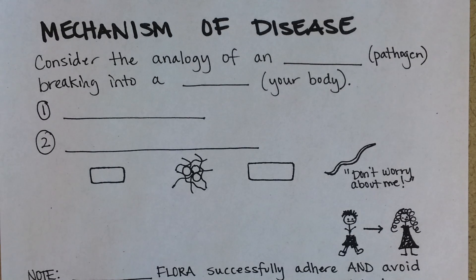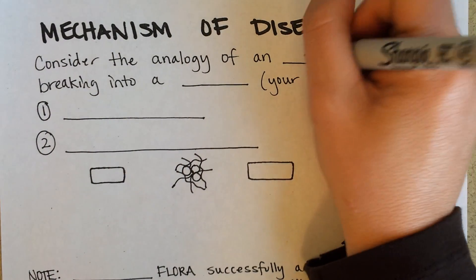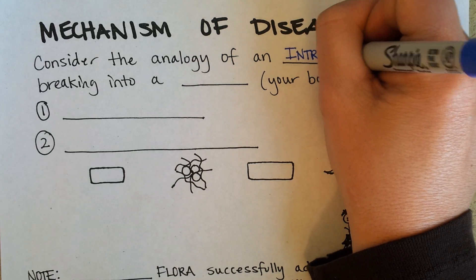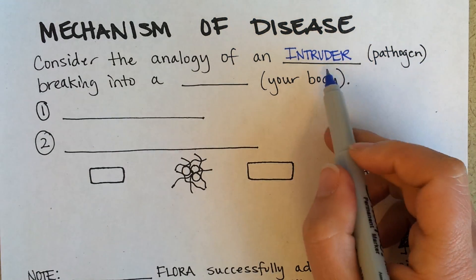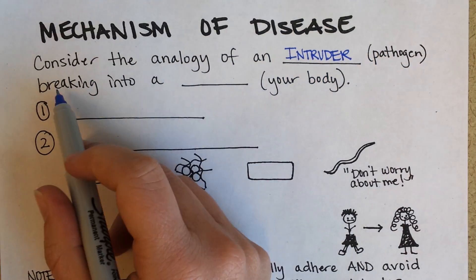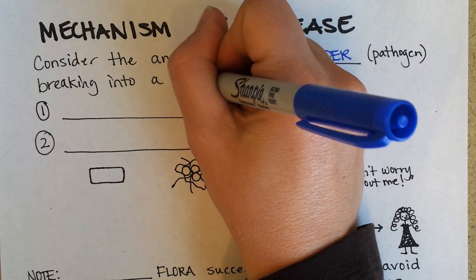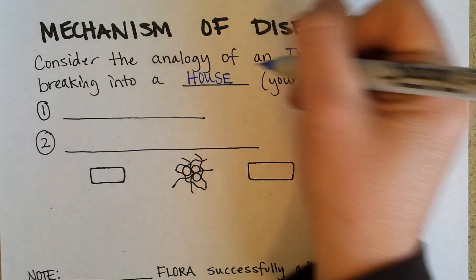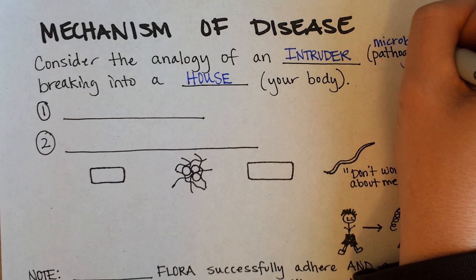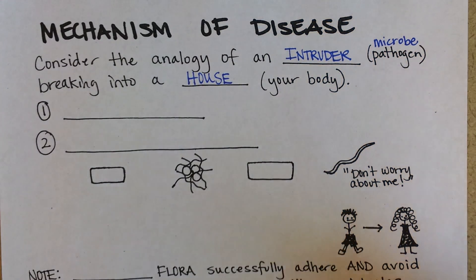This is a fun page where we'll talk about the mechanism of disease. It will be helpful throughout this page to consider the analogy of an intruder — in this example the pathogen — breaking into a house, your body. Or this could also just be the microbe, because they don't all make us sick.